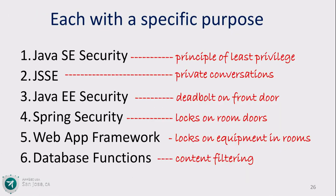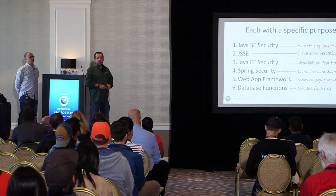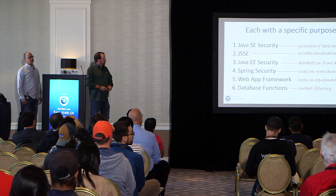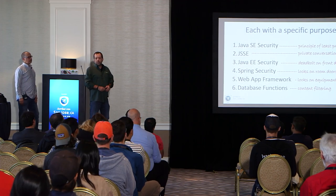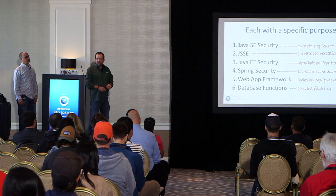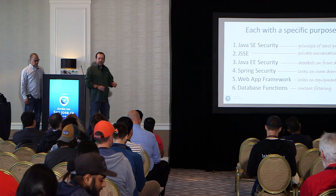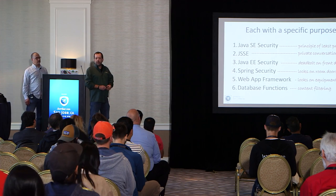Each layer serves a different purpose. Java SE security is for applying mandatory access controls — that's the principle of least privilege. The Java Secure Socket Extension (JSSE) is for encryption and integrity. Java EE security is the deadbolt on the front door — a failsafe mechanism on your application. Spring Security is a Swiss Army knife for Java security — for here in this talk, we're talking about page-level security. The web app framework controls what equipment you can operate once you're in the room. The database layer controls the content — what data can you operate on, look at, or do to it while you're there.